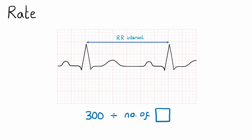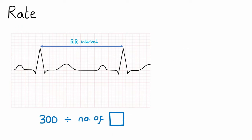Feel free to pause the video here and take a quick moment to calculate the rate. In this RR interval there are six large squares, which gives us a heart rate of 50 beats per minute. This is bradycardic.